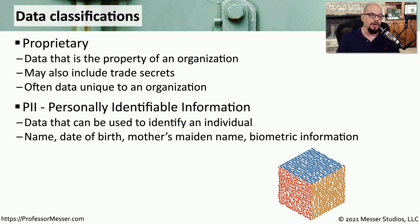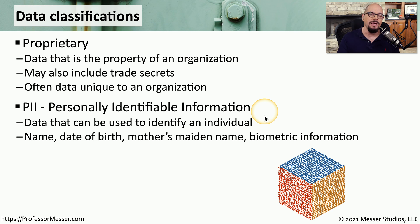Data that is stored as PII is personally identifiable information. This is any type of data that could be tied back to an individual or person. This is information like your name, your address, your telephone number, biometric information, or anything else that can be associated with you.